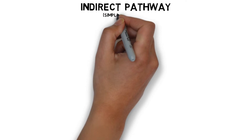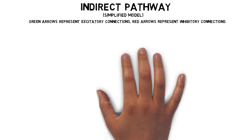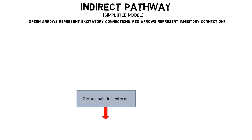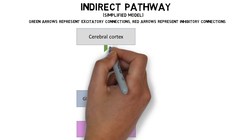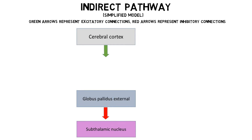The indirect pathway model involves GABA neurons that project from the external segment of the globus pallidus to a region called the subthalamic nucleus. These globus pallidus neurons typically exert an inhibitory effect on glutamate neurons in the subthalamic nucleus. But when the indirect pathway is activated by signals from the cerebral cortex, this causes the activation of GABA neurons in the striatum, which project to the globus pallidus external and inhibit the activity of neurons there.